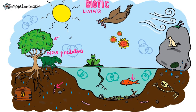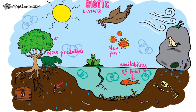Availability of food is also really important, as without adequate food, populations can starve to death. New pathogens can also devastate populations if they have no immunity to it.